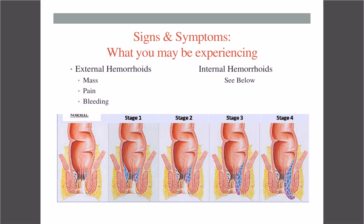Now let's get to the clinical signs and symptoms — what you may be experiencing. For external hemorrhoids, since they're easier to see and feel, you're going to have three things: first, a mass — usually a flesh-colored mass; then pain — either pulsating or a sharp pain like needles being inserted; and then bleeding, usually not a lot but you'll notice it after a bowel movement.